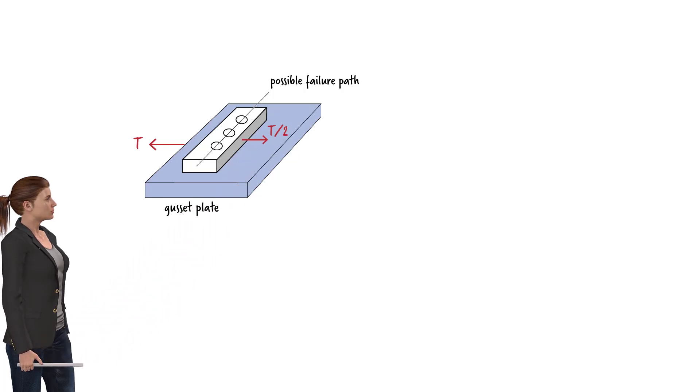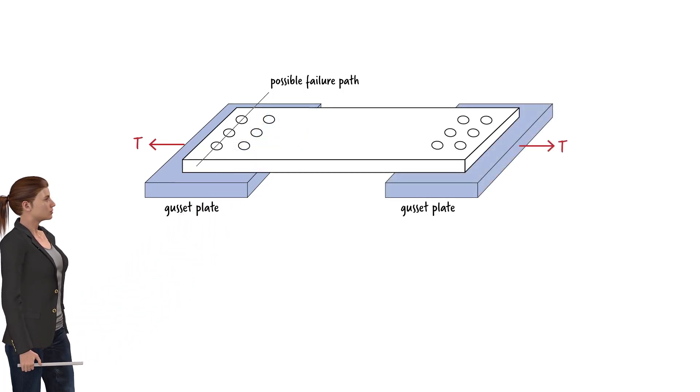The axial force in the member transfers to the gusset plate via the bolts. Each bolt is assumed to be responsible for carrying an equal share of the force. Since the connection is formed using 6 bolts, each bolt carries a force of T over 6.